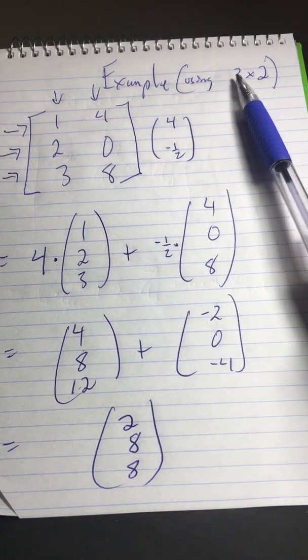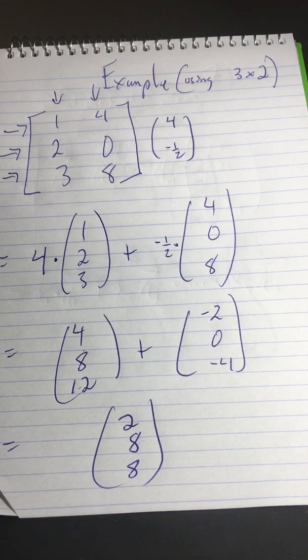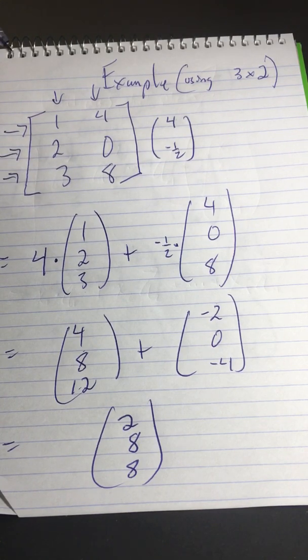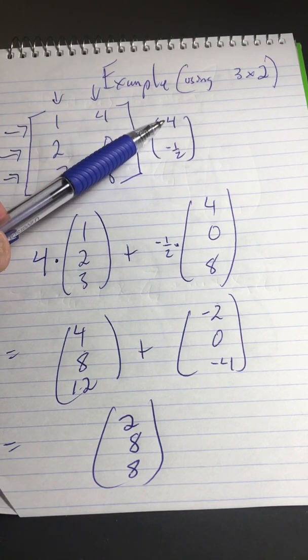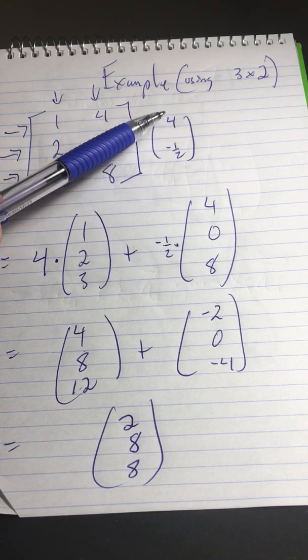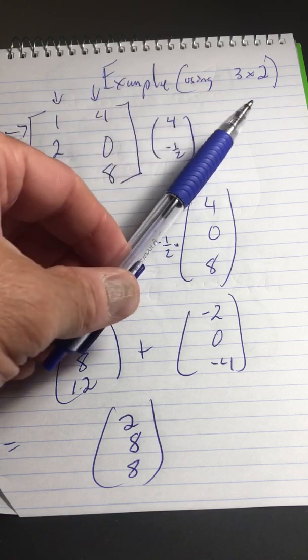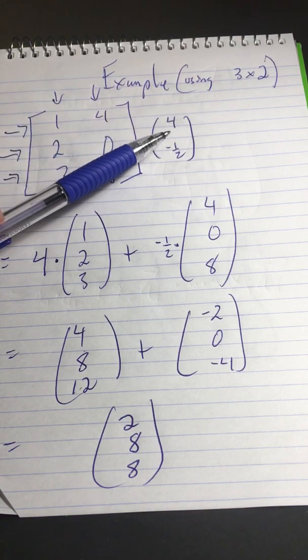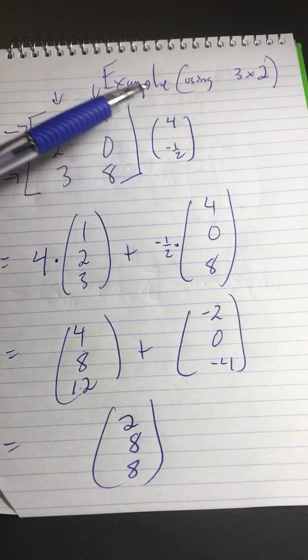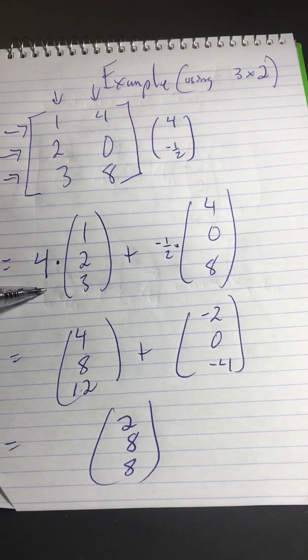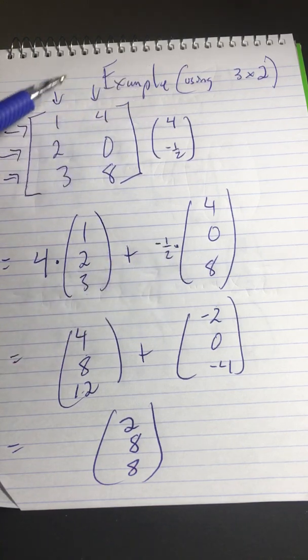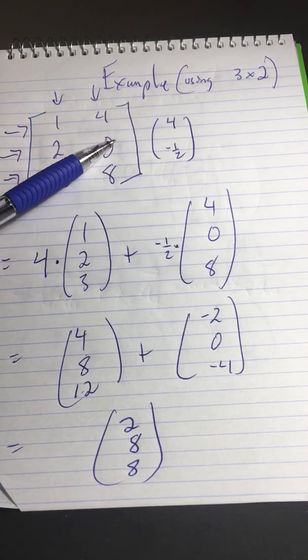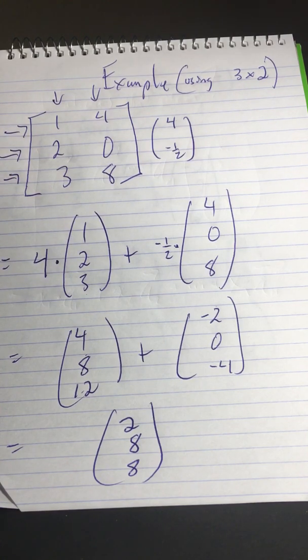Let's do an example. Let's use a 3 by 2. So notice there's 3 rows, 2 columns. That means we're going to go from 2-space to 3-space. So I'm going to pick up a 2-space vector. That means it only has two entries. This is like an ordered pair in a two-dimensional plane. Go over 4, down a half. So we're going to take this first entry times this first column plus the second entry times the second column. First entry times first column plus second entry times second column. If there was a third column, we'd have to have a third entry.